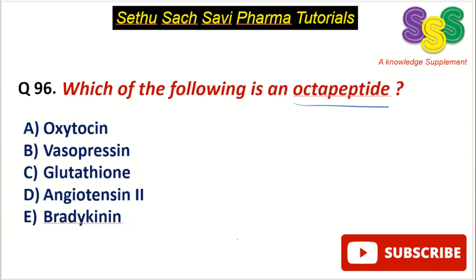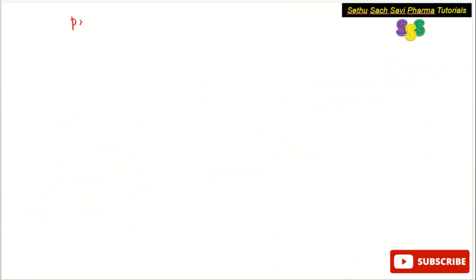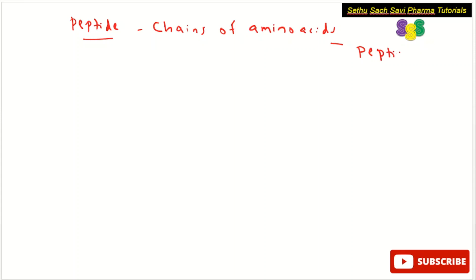First of all, we need to know what is a peptide or what is an octapeptide. Peptides are basically chains of amino acids — amino acids linked together to form peptides. They are linked together by a bond called the peptide bond.